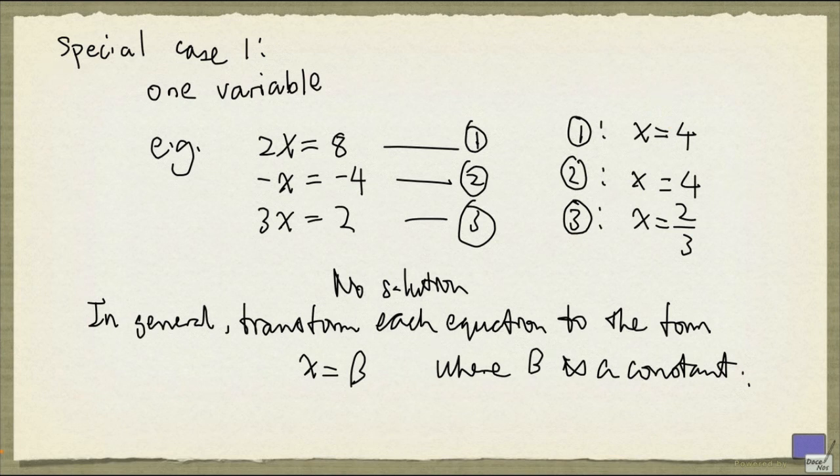So that's the first special case, when there's only one variable. And that's rather easy. The second special case is when we have more than one variable, but there's only one equation in the system.